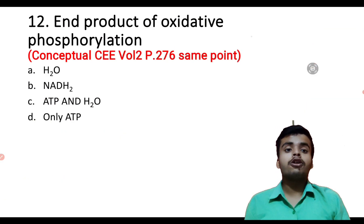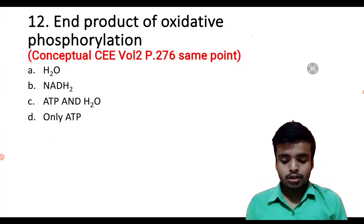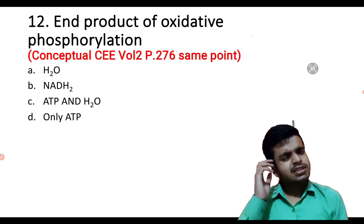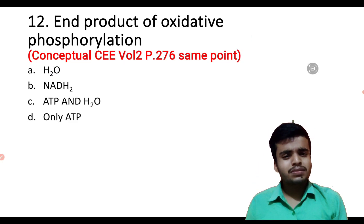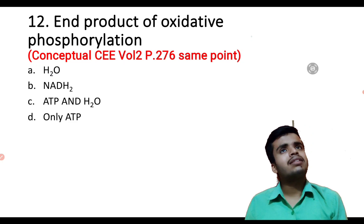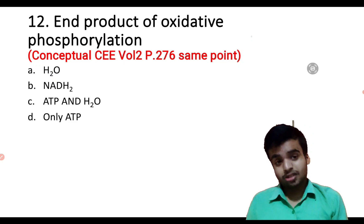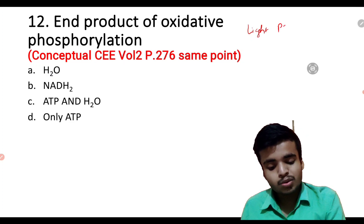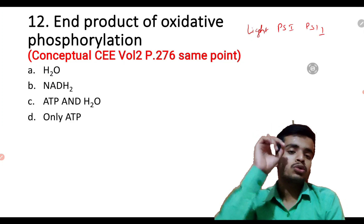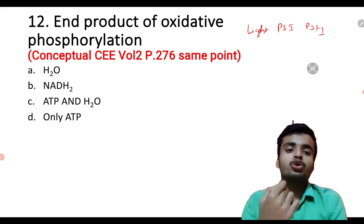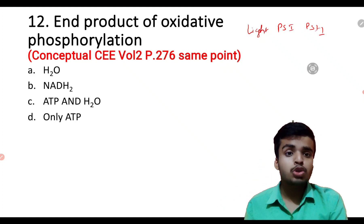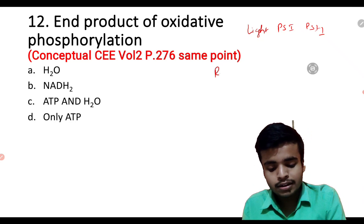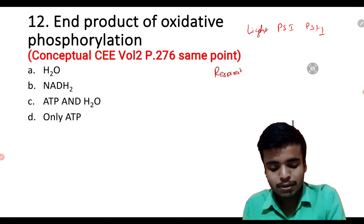What is the product of Oxidative Phosphorylation? Do you know Oxidative Phosphorylation? What is Photophosphorylation? Photophosphorylation is related to PS1 or PS2. Oxidative Phosphorylation involves respiration. The electron transport system — these are all important concepts. Starting with Glycolysis, then the Krebs cycle, and finally all energy goes through ETS.